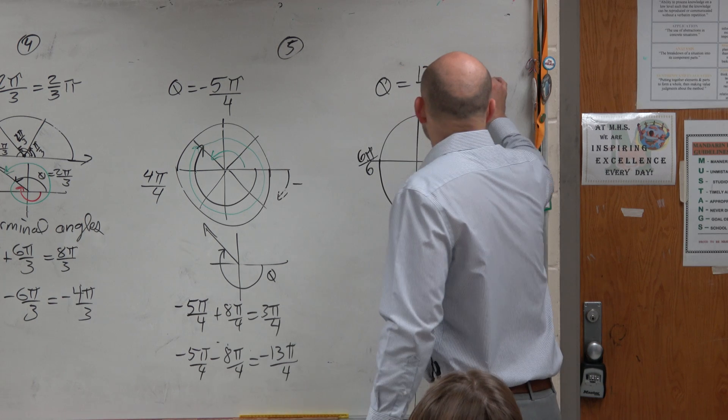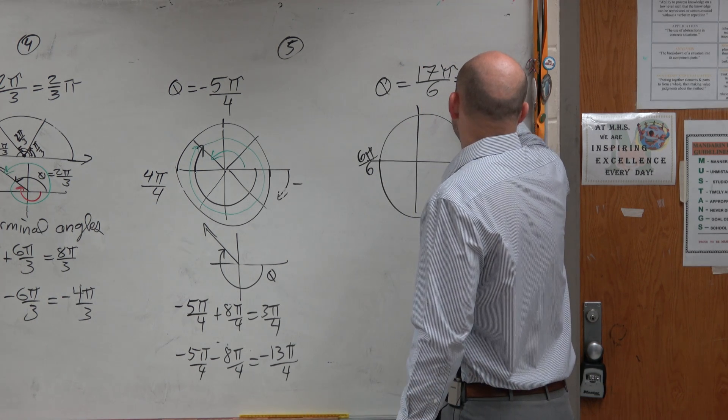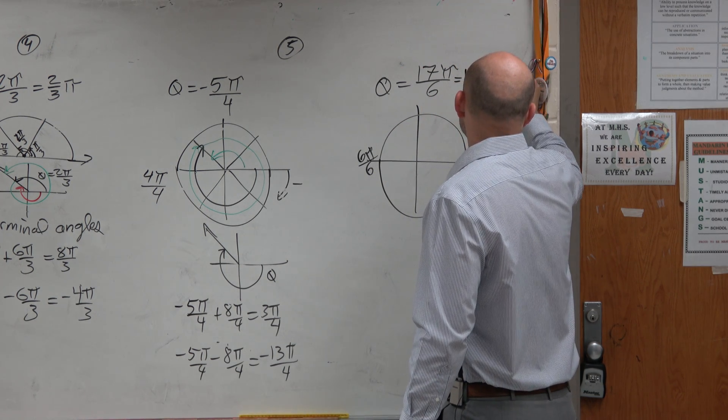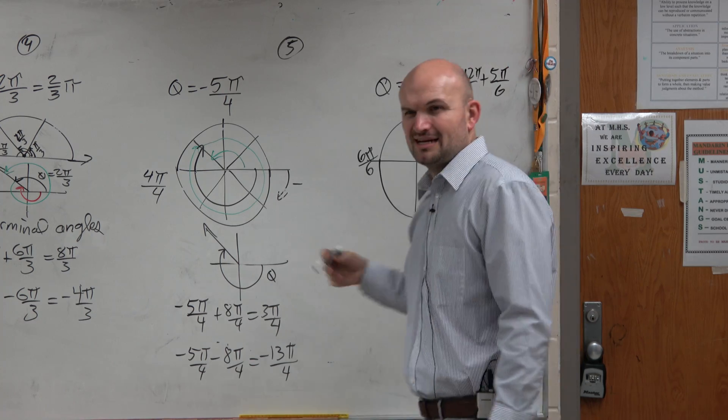So basically, what I could do is I could rewrite this as 12π over 6 plus 5π over 6. Does that kind of make some sense?